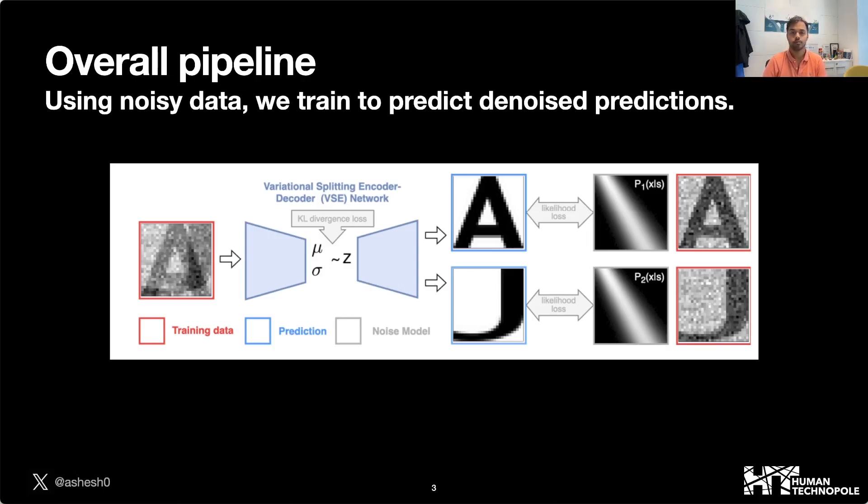We train with noisy inputs and targets, so our denoising is unsupervised. To get good denoising performance in the likelihood loss, we make use of noise models which capture the distribution of noise present in the target images.